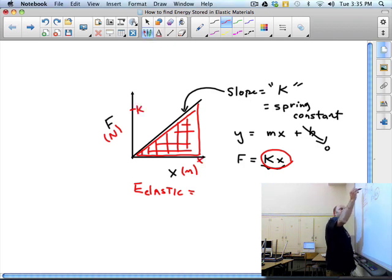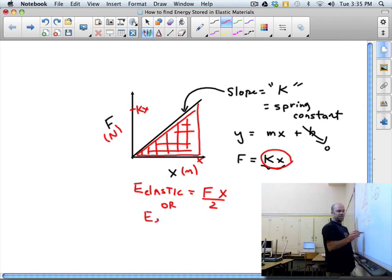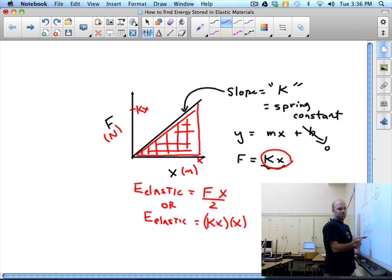The height, we'll call it K times X. So this gets us an equation of either F, the force times X, the amount I stretch the spring, divide by two, or E elastic equals K X times X divided by two. K X is the height of that triangle, X is the base of that triangle, cut that in half.